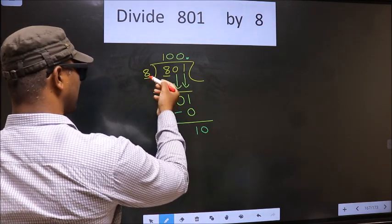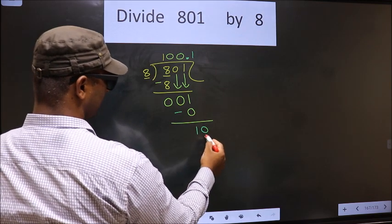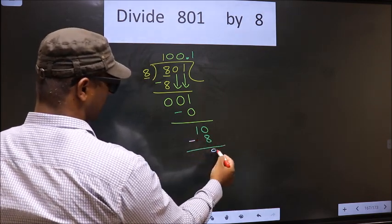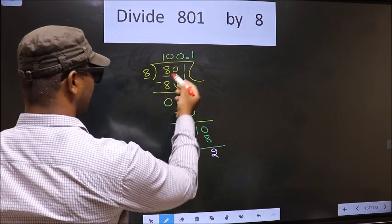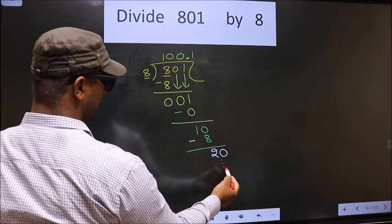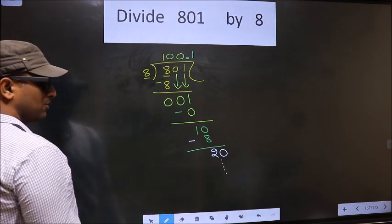A number close to 10 in 8 table is 8 once 8. Now you subtract 10 minus 8, you get 2. 2 smaller than 8. You already have decimal, so you directly take 0 and continue the division. I am not doing that.